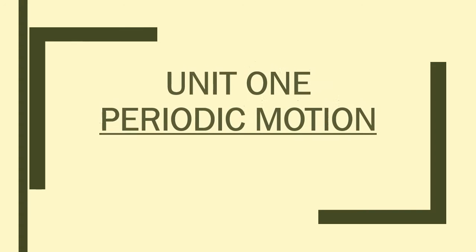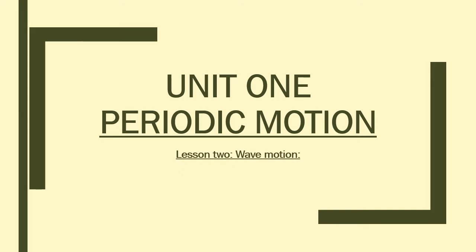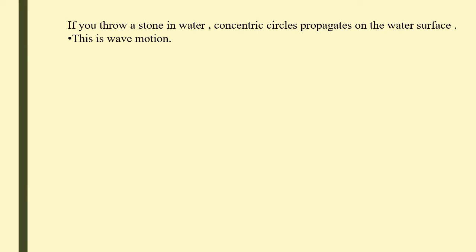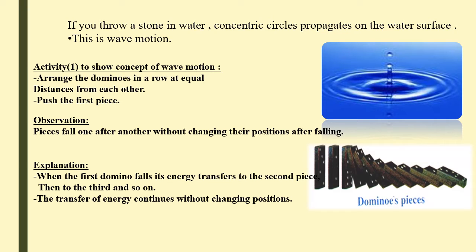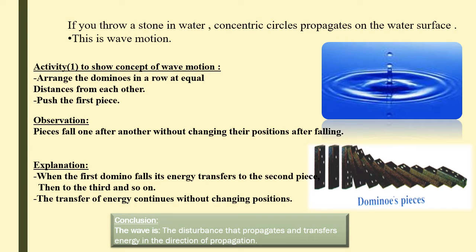Hello. Now we're going to explain lesson two: wave motion. Wave motion is one kind of periodic motion. If you throw a stone in the water, circles are made. We can also explain wave motion in the domino arrangement — when the first domino falls, energy is transferred to all dominos. A wave is a disturbance that propagates and transfers energy in the direction of propagation.